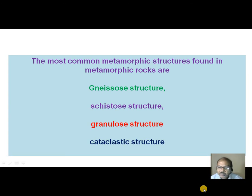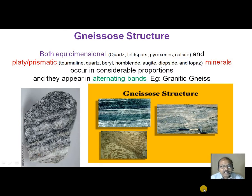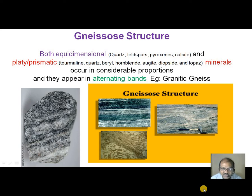The most common metamorphic structures exhibited by metamorphic rocks are niso-structure, cysto-structure, granulo-structure, and cataclastic structure. What is niso-structure? The minerals — equidimensional minerals such as quartz, calcifars, pyroxides, calcite — as well as prismatic or flaky minerals, namely tourmaline, quartz, hornblende, augite, diopside, topaz, if they occur in the rock in alternating bands, in such a case we say the rock is exhibiting niso-structure.